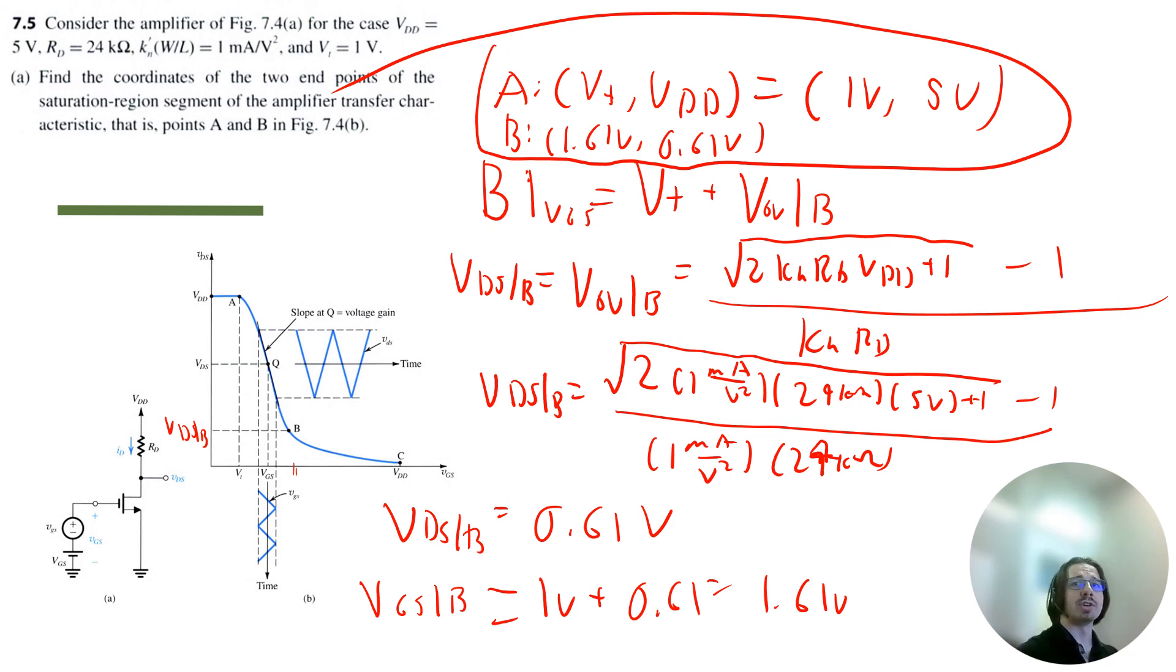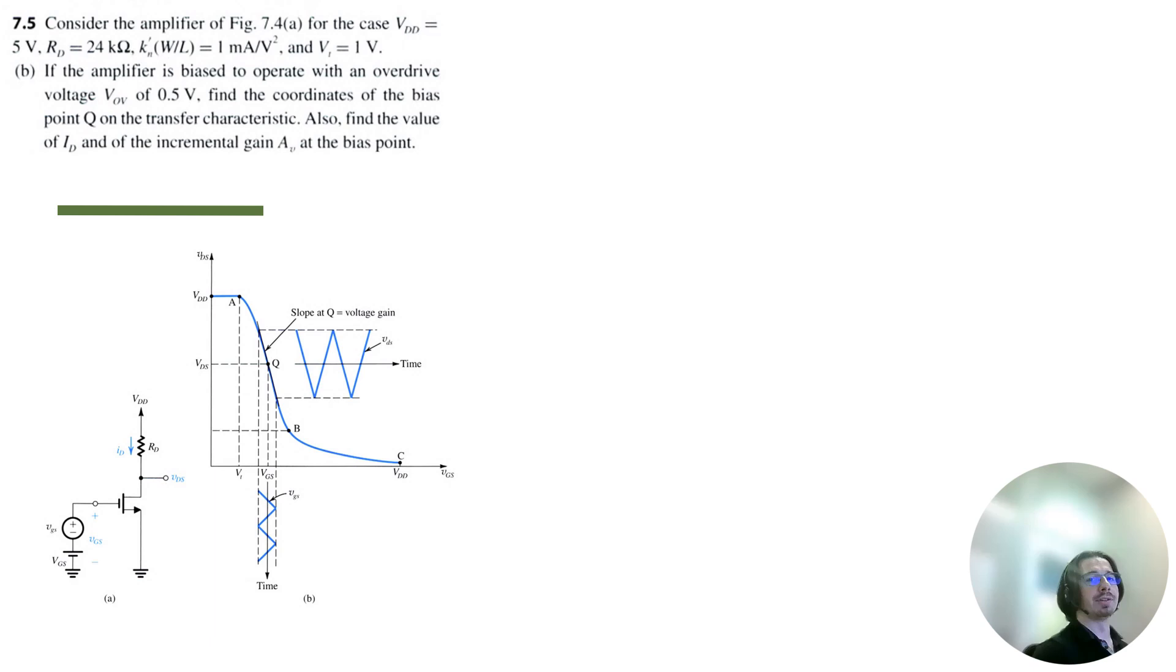Let's move on to part B. If the amplifier is biased to operate with an overdrive voltage of 0.5 volts, find the coordinates of the bias point Q. Also find ID and the incremental gain AV at the bias point Q. If we look at the transfer characteristic right here, we have VT and Q, which is at VGS. This gap in between VT and VGS is actually V overdrive, meaning VGS at Q is just equal to VT plus V overdrive. That's 1 volt plus 0.5 volts, which is 1.5 volts. So that's the VGS coordinate.